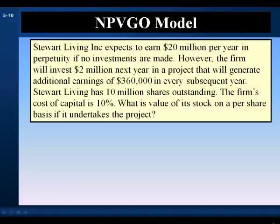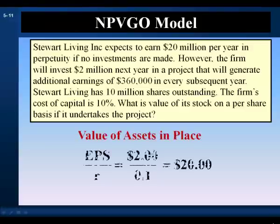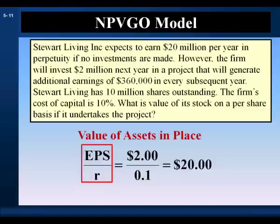Let's look at an example problem. Stewart Living, Inc. expects to earn $20 million per year in perpetuity if no investments are made. However, the firm will invest $2 million next year in a project that will generate additional earnings of $36,000 in every subsequent year. Stewart Living has 10 million shares outstanding. The firm's cost of capital is 10%. What is the value of its stock on a per share basis if it undertakes the project? First, let's value the assets in place on a per share basis. We value the assets in place as a cash cow and calculate the present value of the earnings per share of the assets in place.